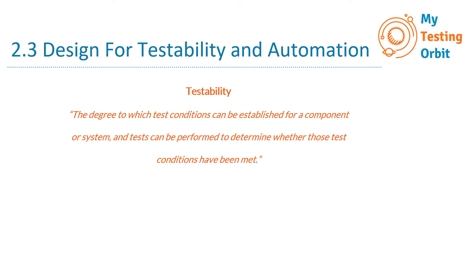Let's first have a look at what testability means. It's the degree to which test conditions can be established for a component or system, and tests can be performed to determine whether those test conditions have been met. Basically, this is an ability of a system — whether it's testable or not — because if you have some planned tests and due to some limitations of the software interface you are not able to automate those tests, which means that you are not able to verify those requirements. So it's limiting you to test specific features, which means that you'll not be able to cover the testing as planned.